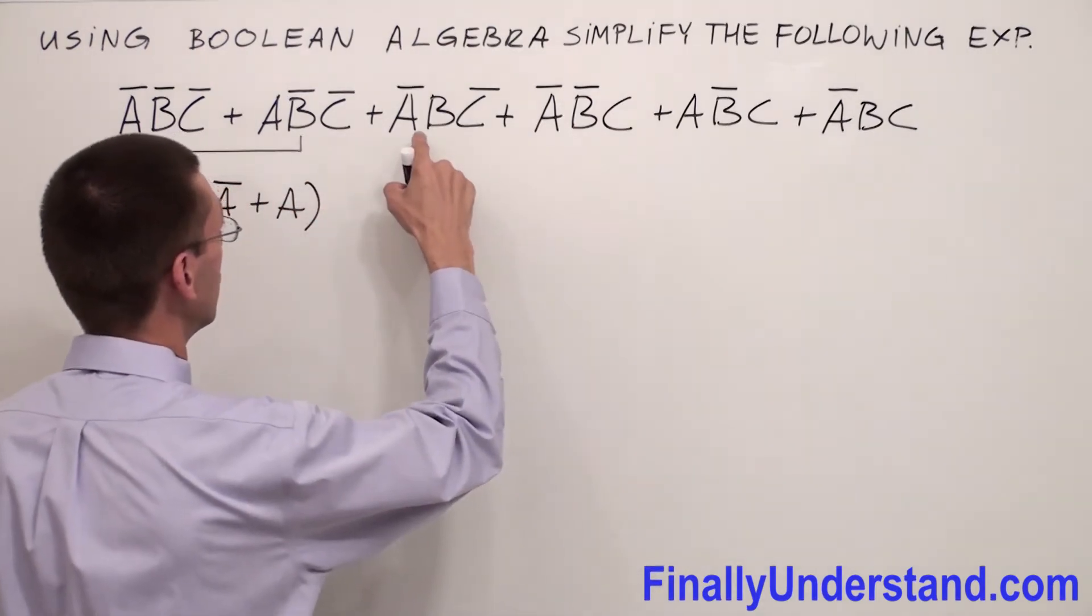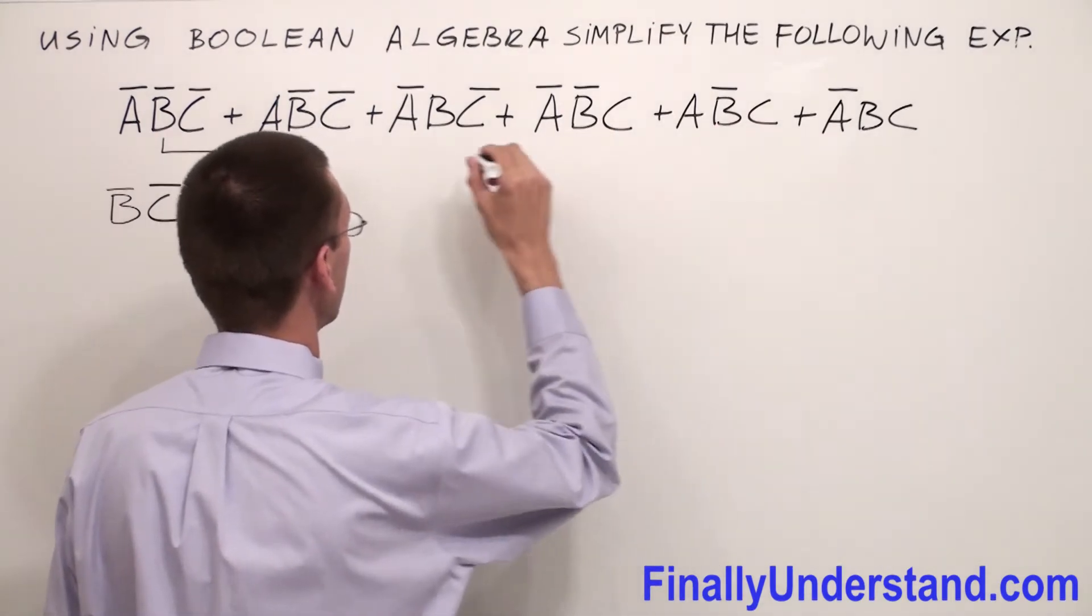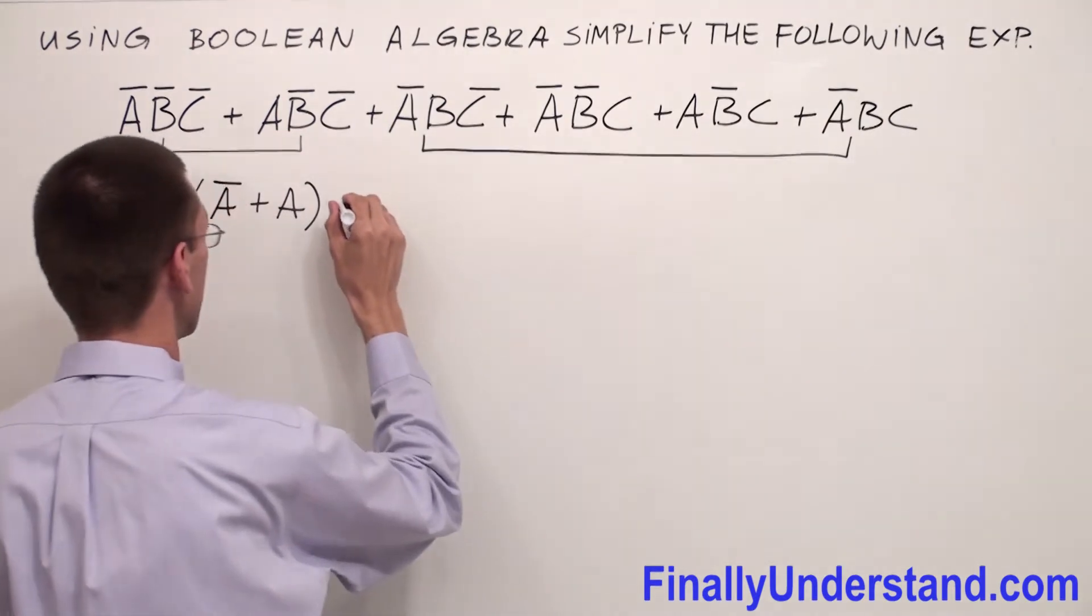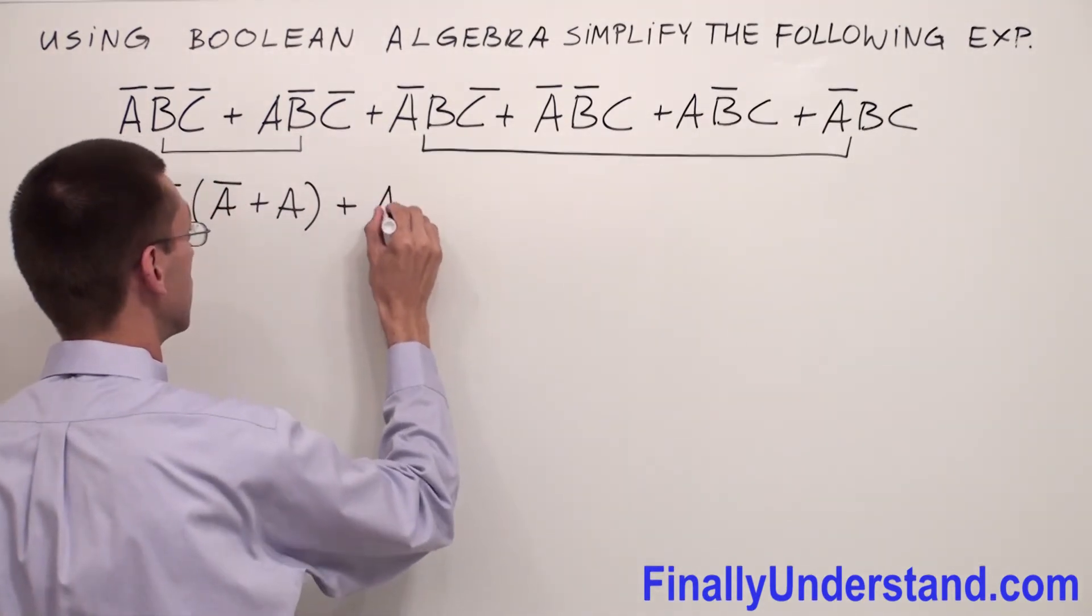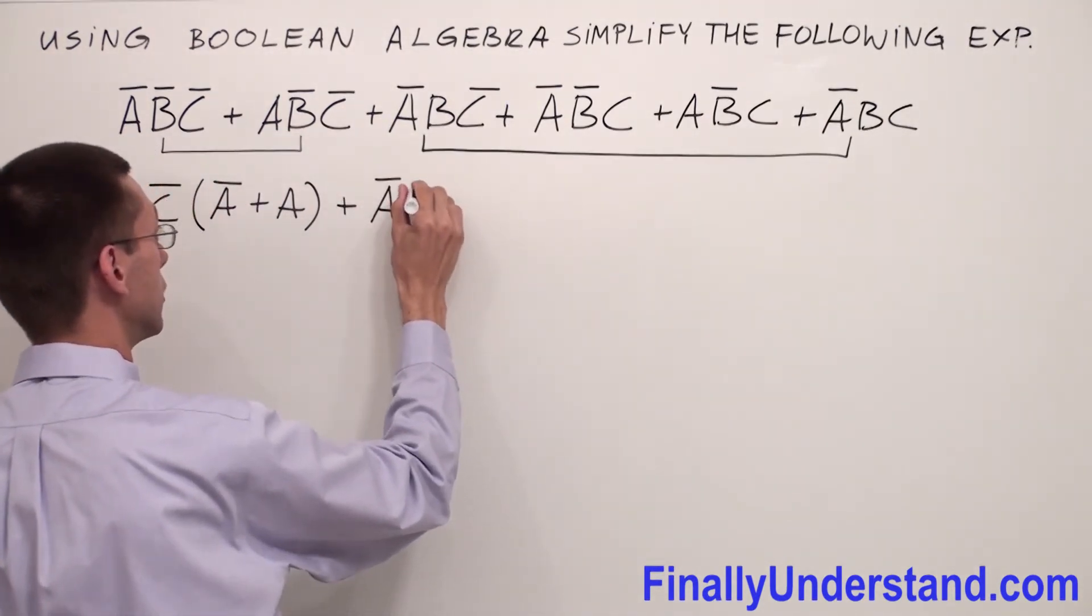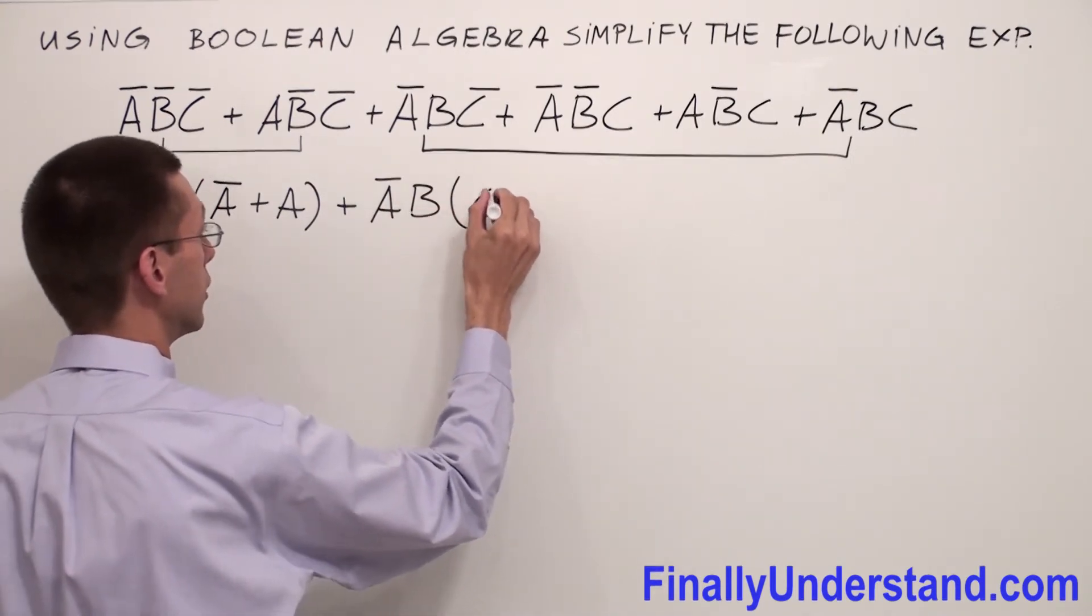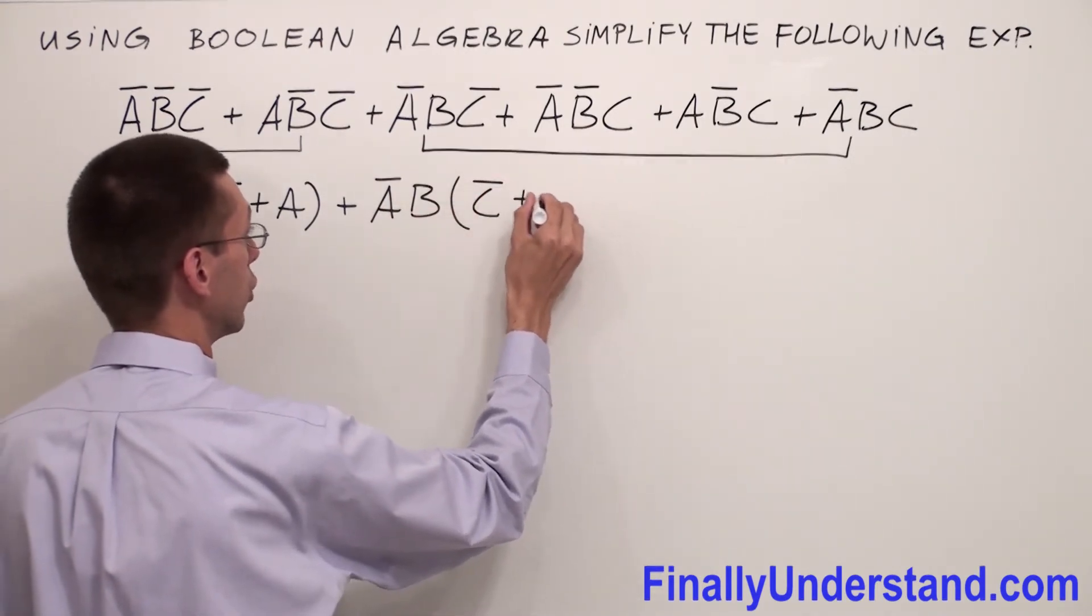From these two terms I'm going to factorize ĀB̄. Inside of the parentheses I'm going to write C plus C̄.